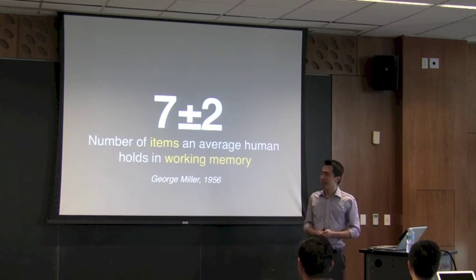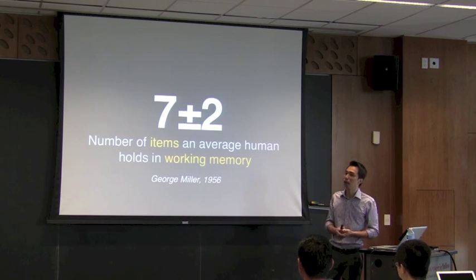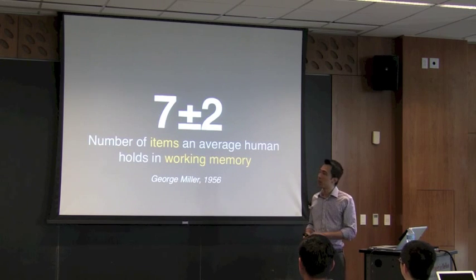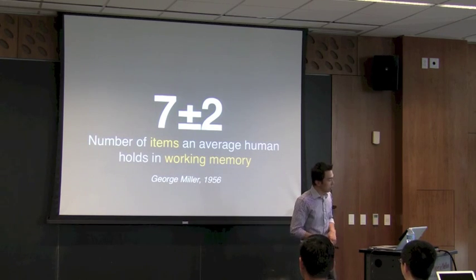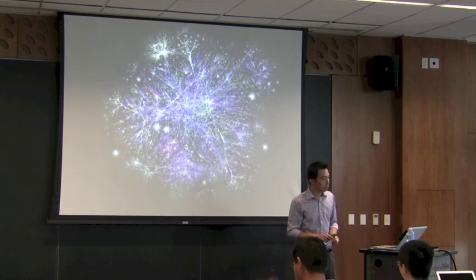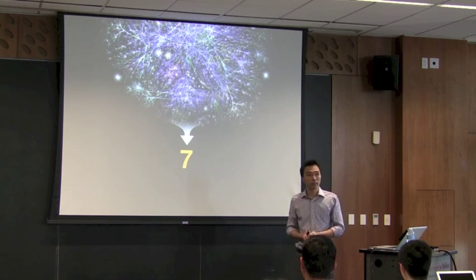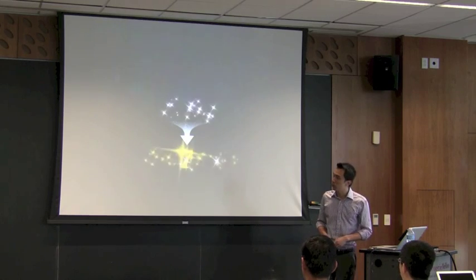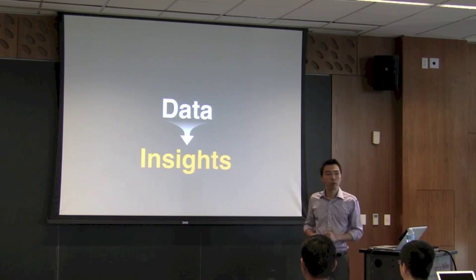This is the famous Miller's Law, which says that an average person can process only a very small number of things at a time — 7 plus or minus 2. So that means, even if we have all this fantastic data, we really want to boil it down to a small number of things that people can actually handle and understand. We want to turn this big data into really important things.